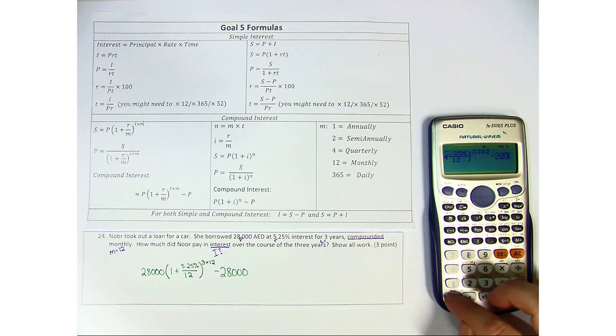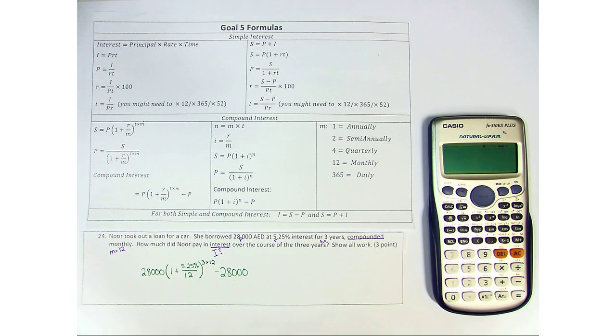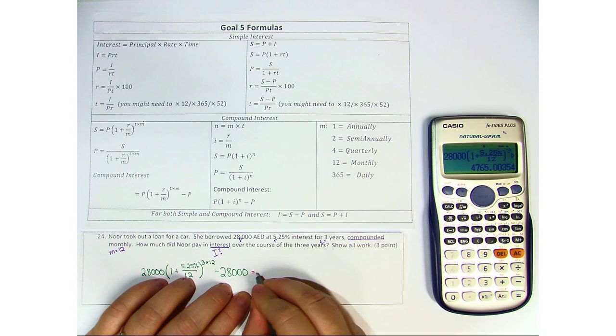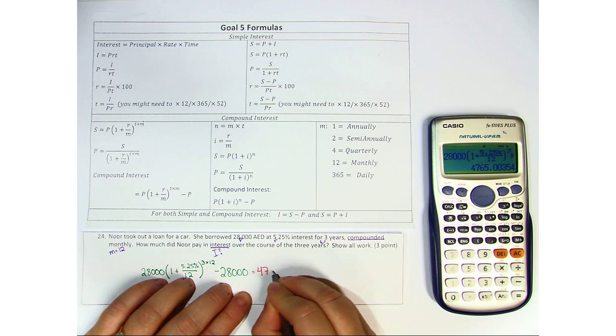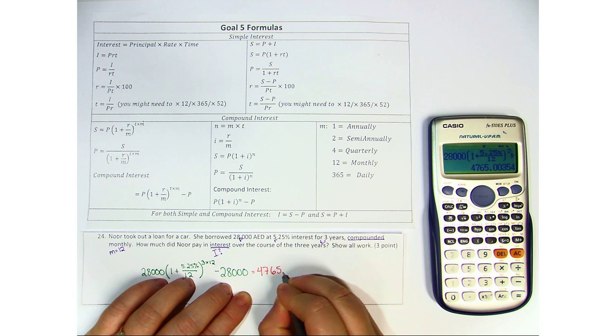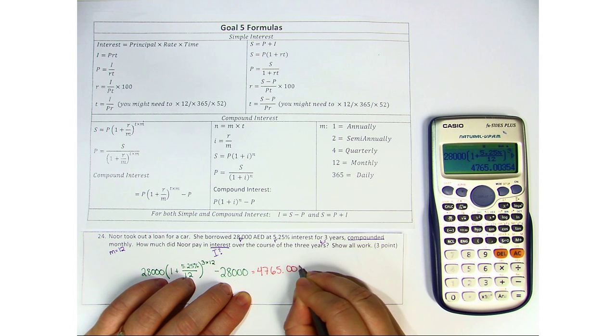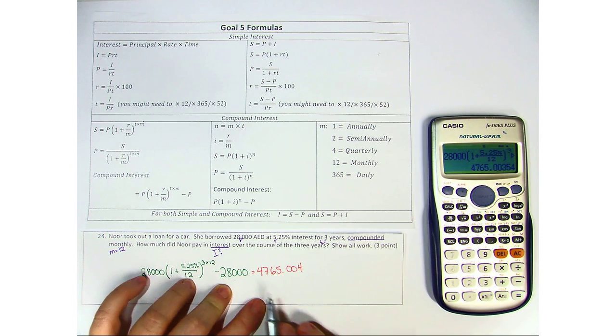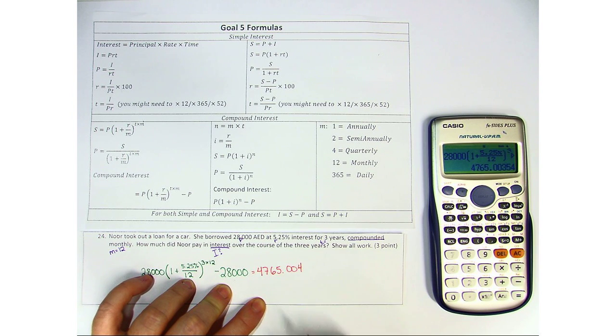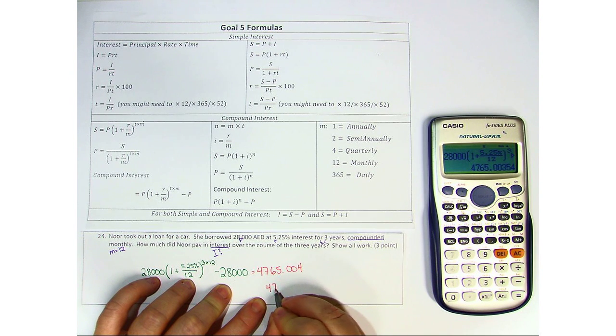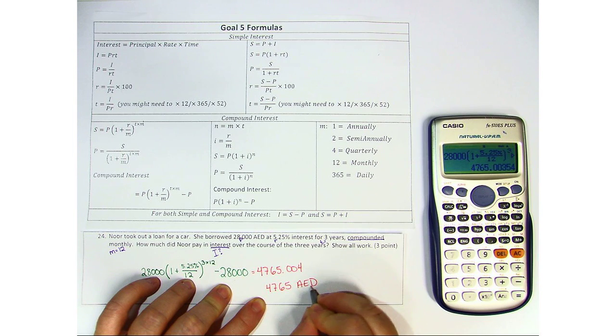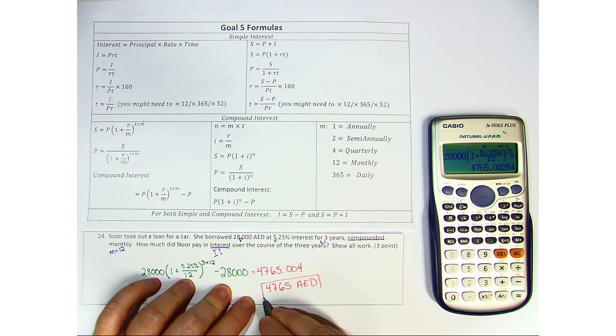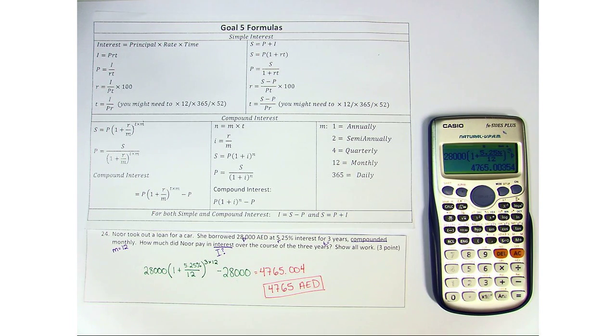minus 28,000 dirhams. And what we find is that she pays 4,765 dirhams, and it's got 0.004. Well, if we round this, what we'll find is that it's only 4,765 dirhams in total. Don't forget to label that it is, in fact, dirhams.